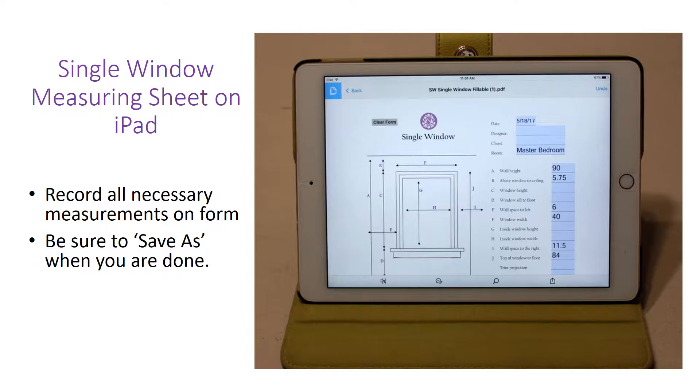So, I went in, I measured these, and they were very basic measurements. And once I was done, I saved them, save as, to the document cloud. And once I saved them to the document cloud, I went in and put the homeowner's name in the title instead of SW single window fillable one, so that I could easily come back to it later and find that particular client.